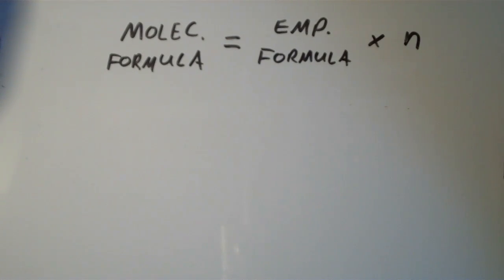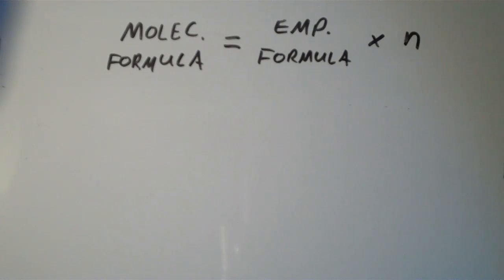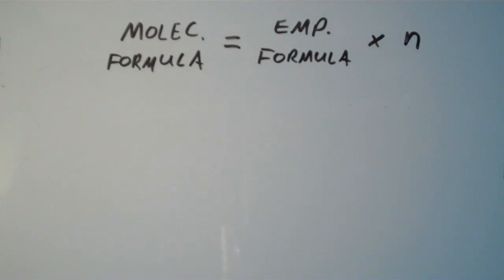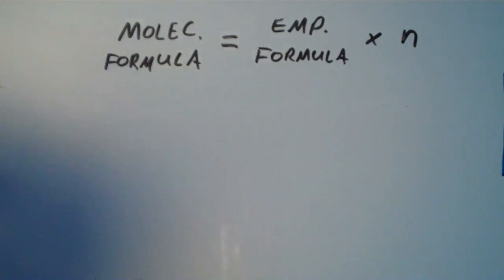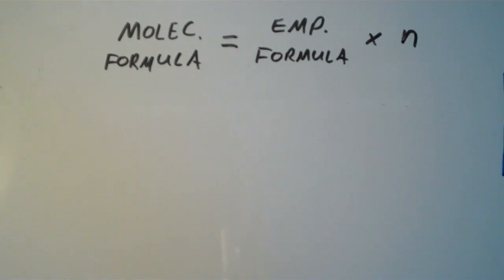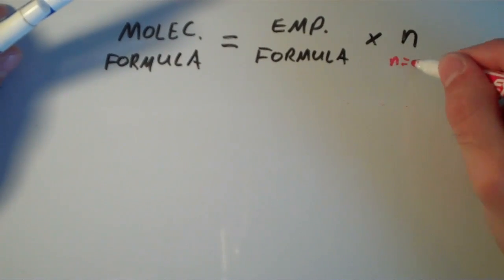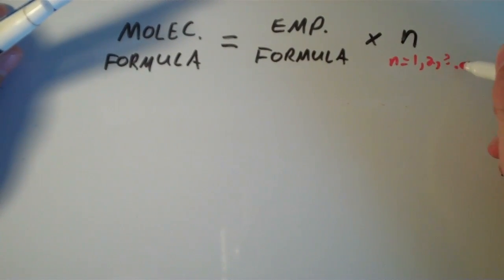So now I'm going to go over how to calculate the molecular formula of a compound using the empirical formula of that same compound. Recall that the molecular formula is always a whole number multiple of the empirical formula. We can express this as: molecular formula equals the empirical formula times n, where n is equal to 1, 2, 3, etc.